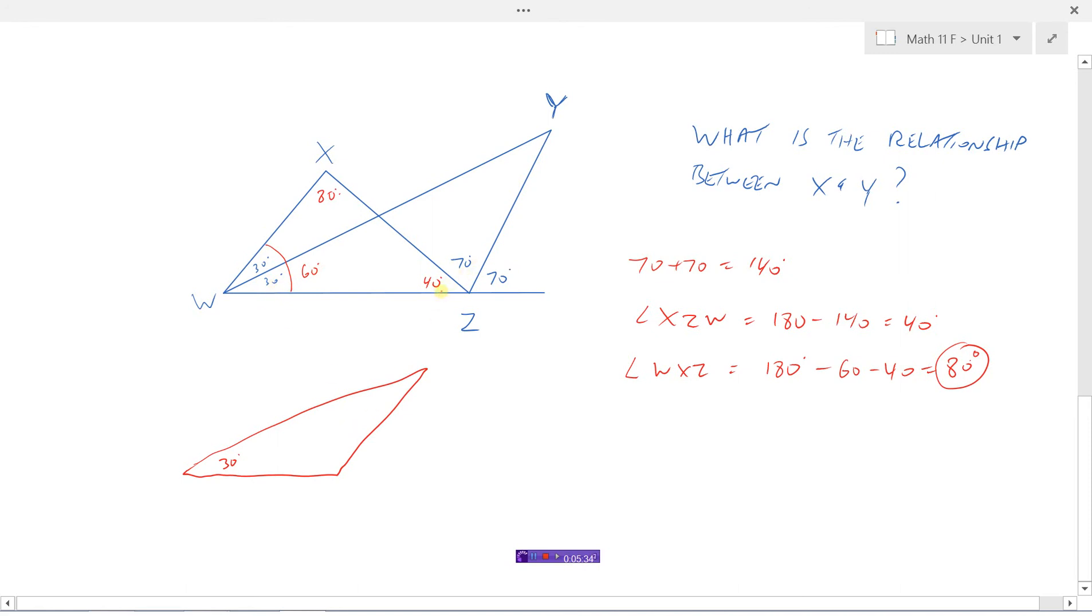This angle would be 110 degrees. So if I want to find angle Y, that's going to equal 180 for all the angles in this triangle, subtract 30 and subtract 110. And trying to be a bit more careful here. 180 minus 30 minus 110 is 40 degrees. So I now know that this little angle up here is 40 degrees. So it looks like what's the relationship between X and Y? It looks like I can say angle X is double angle Y.